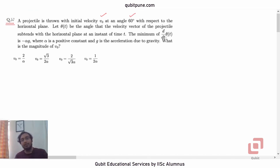The minimum of the derivative of theta with respect to t is negative alpha g, where alpha is a positive constant and g is the acceleration due to gravity. What is the magnitude of v0? Options are: 2 by alpha, root 3 by 2 alpha, 2 by root 3 alpha, and 1 upon 2 alpha.